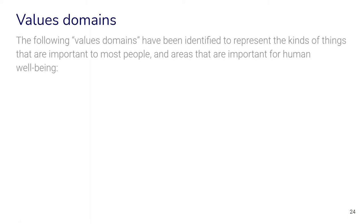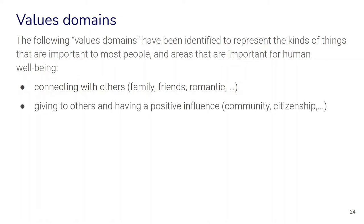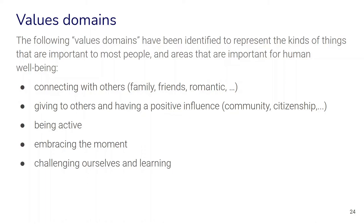Another interesting aspect is so-called values domains — groups of values identified by several psychologists that represent the kinds of things important to most human beings and important for human well-being. They include connecting with others — family, friends, romantic partners — our need to give to others and have a positive influence on our communities, being active through sports, dancing, going for a walk, embracing the moment, challenging ourselves and learning, and simply caring for ourselves, our health and well-being.